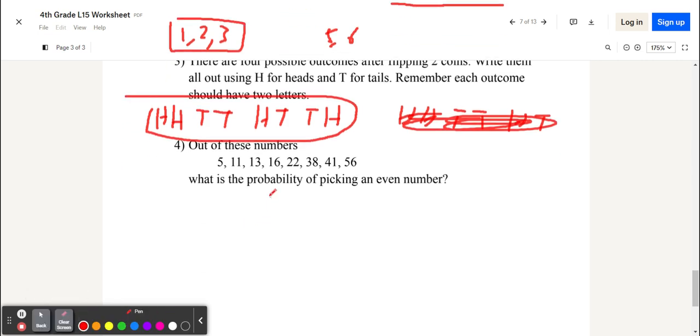And then, out of these numbers, what is the probability of picking an even number? Well, how many even numbers are there? There's 1, 2, 3, and 4. And there are 8 numbers in total. So, it's 4 out of 8 chance, which equals 1 over 2, which is a 50% chance.